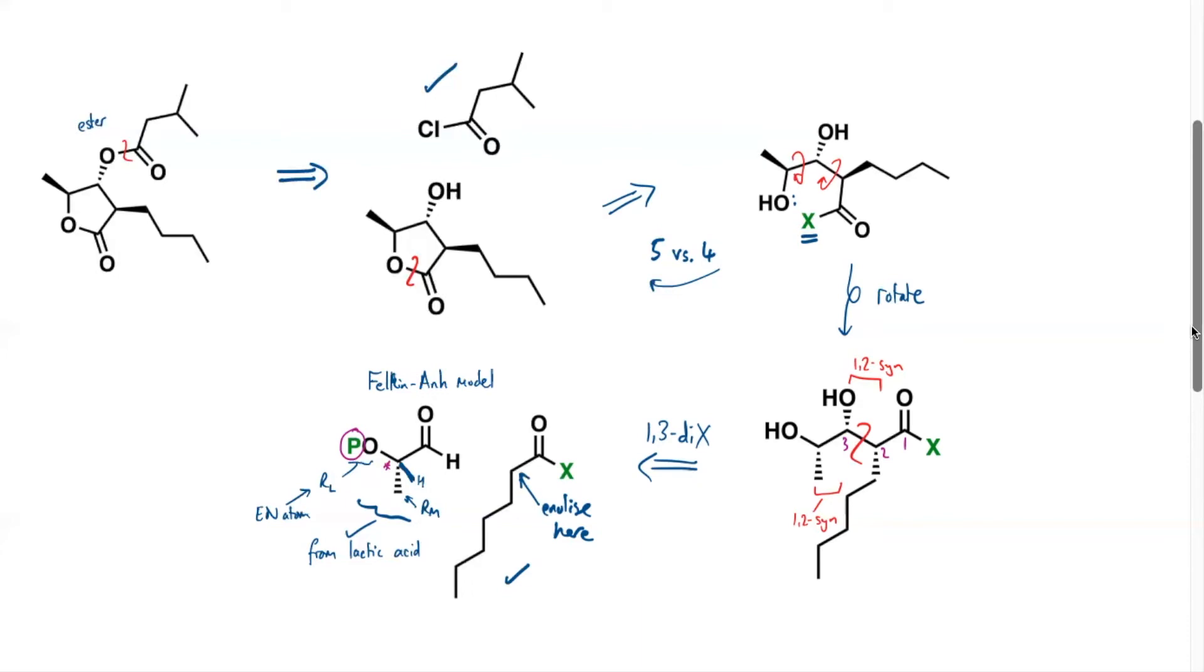So we can notice at this point that to some extent it won't matter too much what we're going to put as that protecting group because we've got the electronegative oxygen in there, so we just need some sort of default protecting group. So a sensible one might be something like a TES group, by which I mean a silyl ether, so triethylsilyl. That's a reasonably robust silyl ether for this type of purpose.